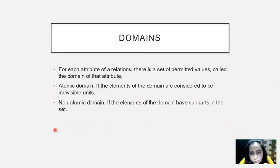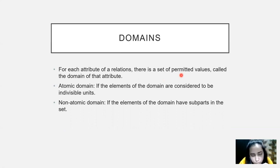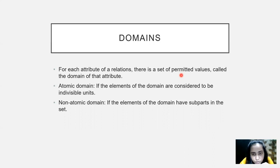Every attribute in the relational model contains a set of permissible or permitted values. For example, if I have a column named ID for a department with a hundred employees, and I want to give them IDs from one to a hundred, then that column should not contain characters like ABC or special characters like star and hash — it should contain only numbers from one to hundred. Those values from one to hundred form the domain for my ID attribute. Those are the permitted values.